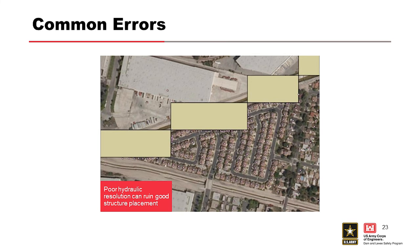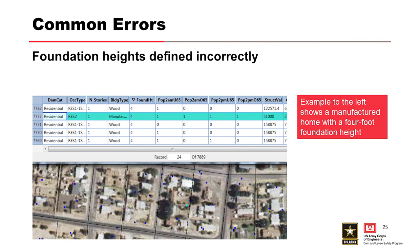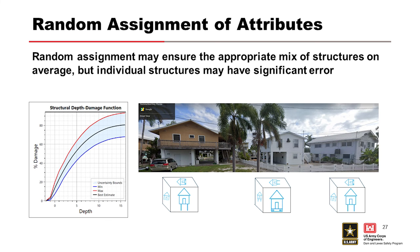Here are examples of common errors. One example shows two prisons with large populations in odd places — hint: search an online map for prisons in the area. Another common error shows a manufactured home with a four-foot foundation height. As discussed before, this one-time assignment is likely to result in errors and contains no uncertainty without further user inputs.